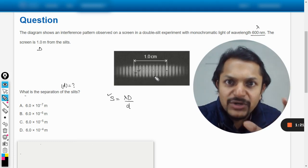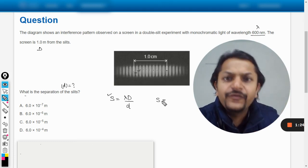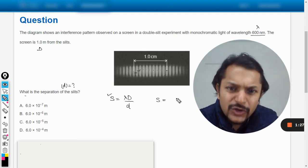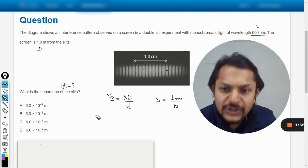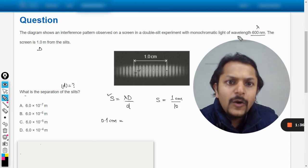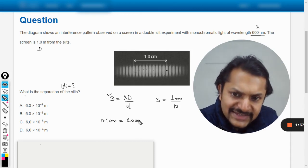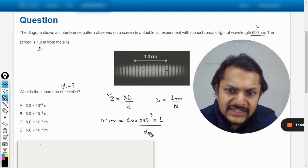So we want to find s. What is the fringe width or spacing? It will be one centimeter divided by ten, so it is 0.1 centimeter. What is the wavelength? Wavelength is given as 600 nanometers. Capital D is one meter. Small d is unknown to us.